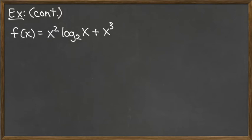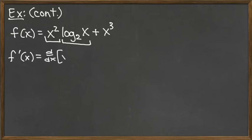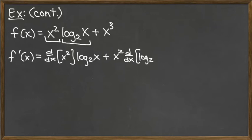This is a copy of what we had from the previous slide. We have f of x equals something where the first term is a product of two terms, so we must use the product rule there. We also need to remember the derivative of x cubed at the end. So f prime of x equals: the derivative of x squared times log base 2 of x, plus x squared times the derivative of log base 2 of x — that's the product rule part — and then we add the derivative of x cubed using our sum rule.